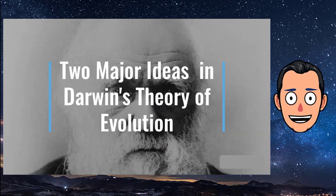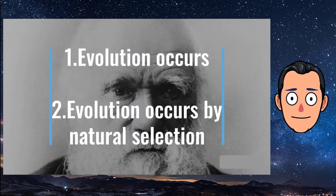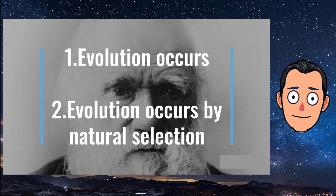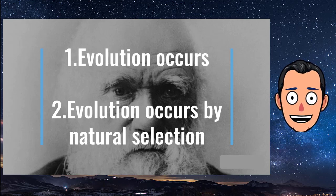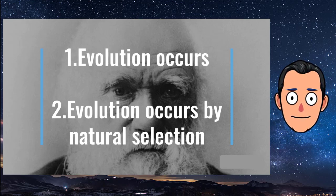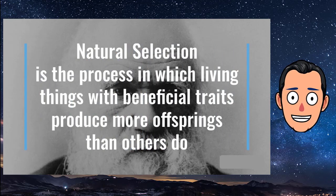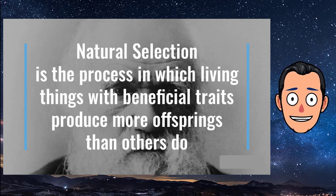Two Major Ideas in Darwin's Theory of Evolution: One idea is that evolution occurs — in other words, organisms change over time. Life on Earth has changed as descendants diverge from common ancestors in the past. The other idea is that evolution occurs by natural selection — the process in which living things with beneficial traits produce more offspring than others do.